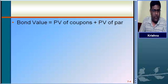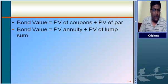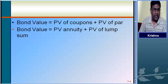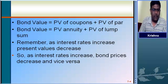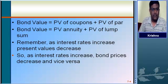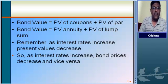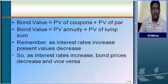Bond value equals the present value of the coupon payment plus the present value of the lump sum which we are going to receive at the time of maturity of the bond. Here we have to remember the inverse relationship between the interest rate and bond prices, and between the interest rate and present values. Whenever interest rates increase, the bond price will decrease, and vice versa. Similarly, whenever the interest rate increases, the present values will decrease, and vice versa.